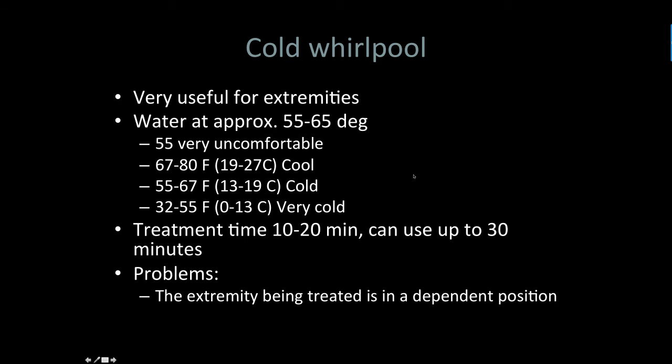Cold whirlpool is probably more used in athletic training clinics than you're going to see in PT clinics. It can work well for extremities. Getting down below 55°F is going to be pretty uncomfortable. For longer immersion, the range of 32 to 55 degrees is more where we're going to be using this for cold treatments. The big problem with any whirlpool or tub is that dependent position — we're liable to cause more difficulty if we've got an inflammatory process going on. We're going to experience a little bit of that in lab as well.